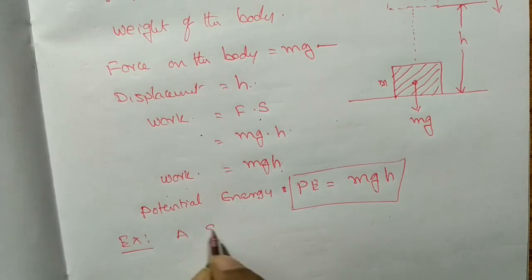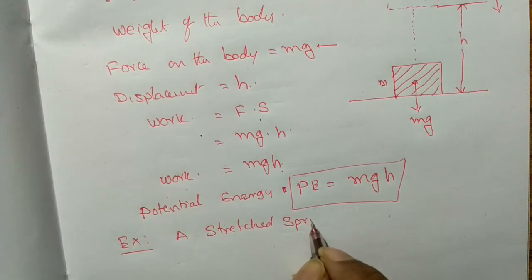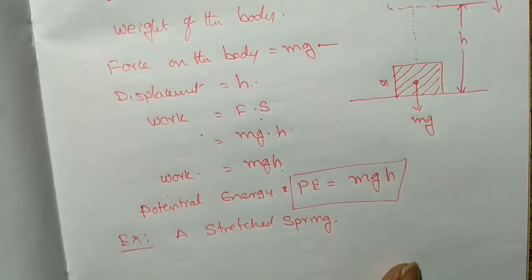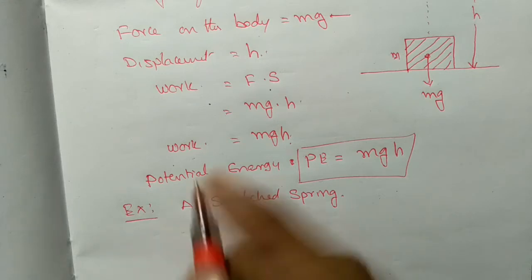Examples of potential energy include a stretched spring, which stores potential energy. Another example is an overhead water tank — water stored at a height has potential energy due to its position, and it acts in the downward direction.